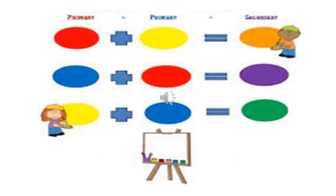Red plus yellow makes the secondary color orange. Primary colors blue and red, when mixed together, they form purple color. Yellow and blue, when mixed, they form green color.